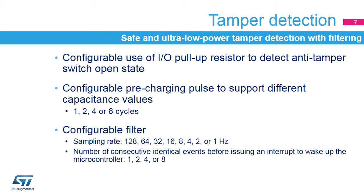The tamper detection circuit includes an ultra-low power digital filter. The internal I/O pull-up can be used to detect the anti-tamper switch state. The pull-up is applied only during the pre-charging pulse in order to avoid any consumption if the tamper pin is at a low level. The pre-charging pulse duration is configurable to support different capacitance values and can be 1, 2, 4, or 8 TAMP clock cycles. The pin level is sampled at the end of the pre-charging pulse. A filter can be applied to the tamper pins, consisting of detecting a given number of consecutive identical events before issuing an interrupt to wake up the device. This number is configurable and can be 1, 2, 4, or 8 events at a programmable sampling rate from 1 to 128 Hz.